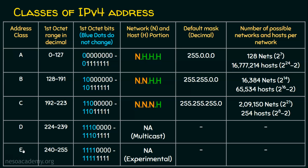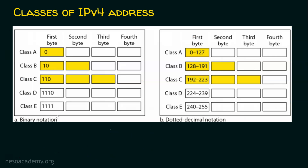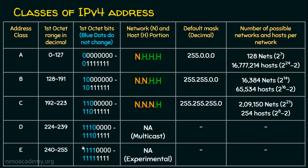For Class E, the first four bits are all ones (1,1,1,1), leaving four remaining bits. The starting value with four zeros gives 240 in decimal, and the ending with four ones gives 255. So Class E ranges from 240 to 255 in the first octet.